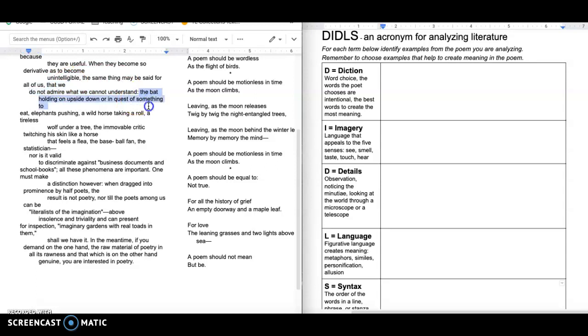But then she tells us some tangible, imagery-based examples of things that we can't understand. And so maybe we don't like them. A bat holding on upside down or in quest of something. We don't understand the bat. And so they kind of scare us or elephants pushing, or a wild horse taking a roll, or a tireless wolf under a tree. These things all have mystery to them. We don't fully get it, why they do what they do, how they do it. We like to study it. But we often don't admire something that we don't understand.